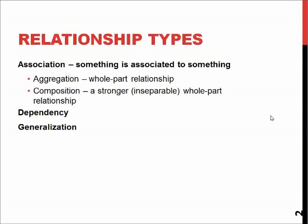Aggregation and composition are both marked with a diamond — an open/white diamond or a black diamond — indicating which type it is. It means that the object at the other end of the line is part of or belongs to the object which has the diamond.